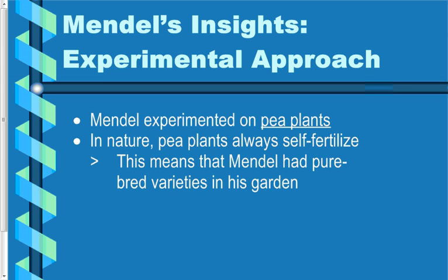All the pea plants in Mendel's garden when he started his experiments were all pure breeding. We use the term purebred when we talk about dogs and cats — if you have a purebred cocker spaniel, its parents were cocker spaniels. If you breed that cocker spaniel with other purebred cocker spaniels, you can predict what the offspring are going to look like. Similarly, Mendel knew the offspring of his pea plants would look very similar because they were pure breeding.